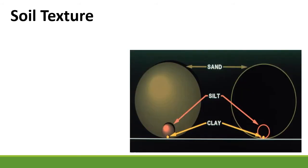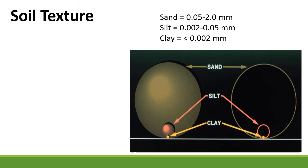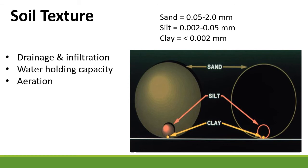Sand, silt, and clay are types of texture. Sand is like sand on the beach — very large particles. Silt is quite small with a flowery feeling. Clay is very small. It's important to determine the amounts of sand, silt, and clay because they affect the drainage, water-holding capacity, and aeration of the soil. Clay soils have lots of water-holding capacity but not much drainage or aeration, whereas sandy soils have lots of drainage but not much water-holding capacity. Texture also affects how susceptible to erosion a soil is — sand is a large particle and hard to move by wind or water.